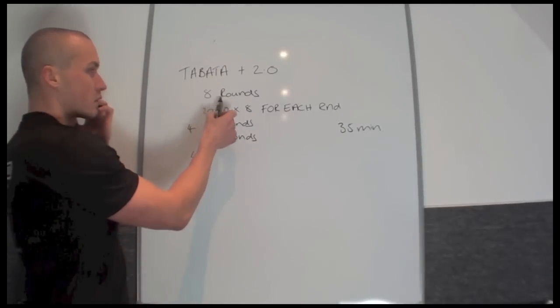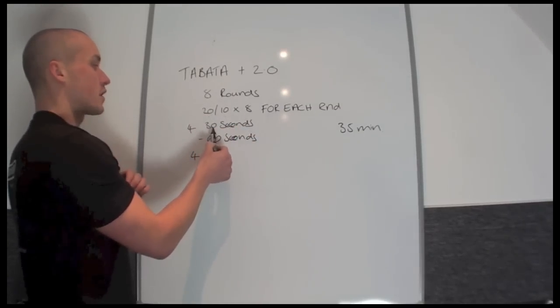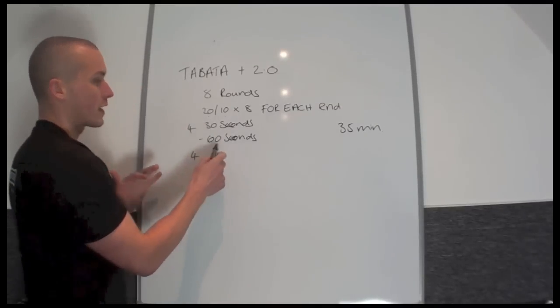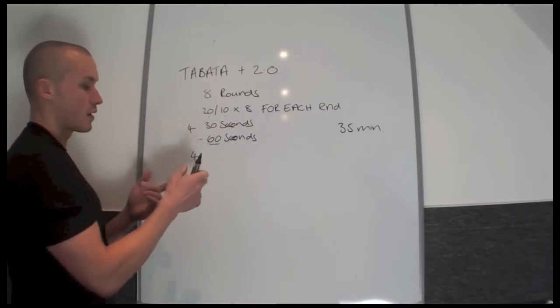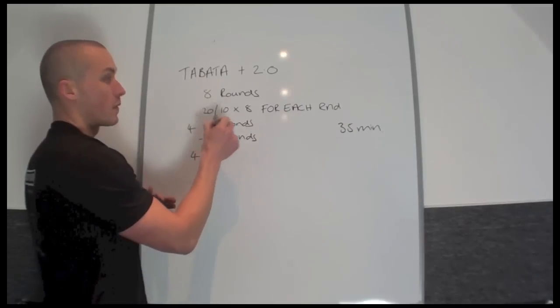So you're going to complete 8 rounds of total work. It's going to be 20 seconds work, 10 seconds rest, 8 times. Then you get 30 seconds rest in between rounds 1, 2 and 3. After round 4, you'll get 60 seconds rest. And then in rounds 5, 6, 7 and 8, you'll get 30 seconds rest in between each of the work periods.